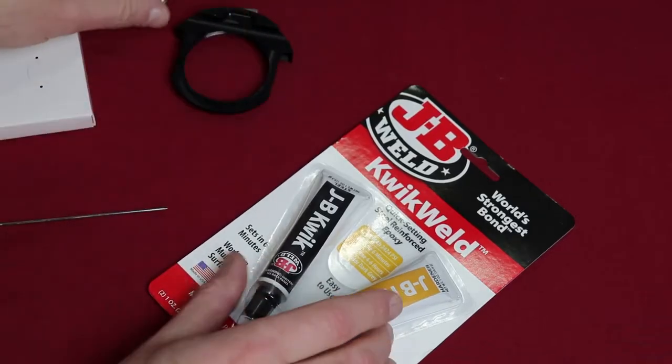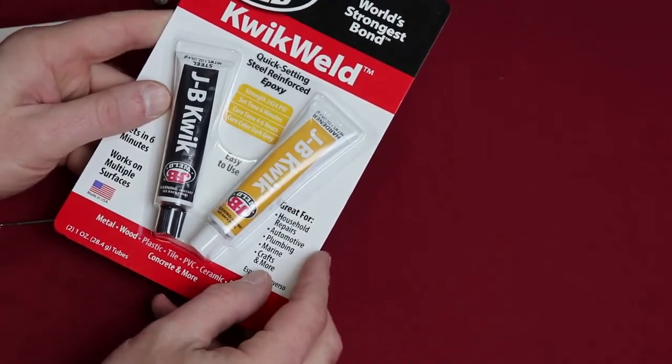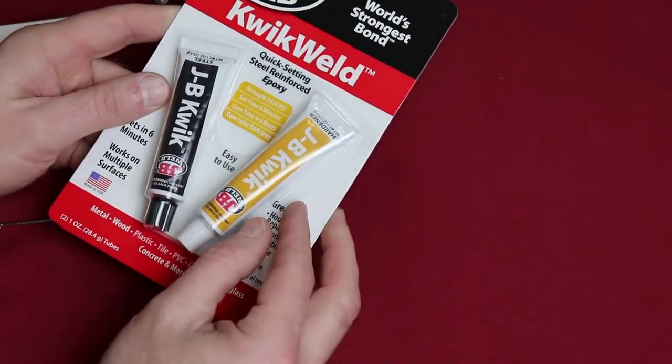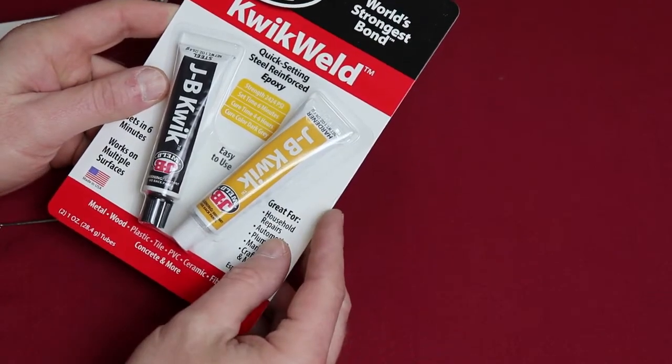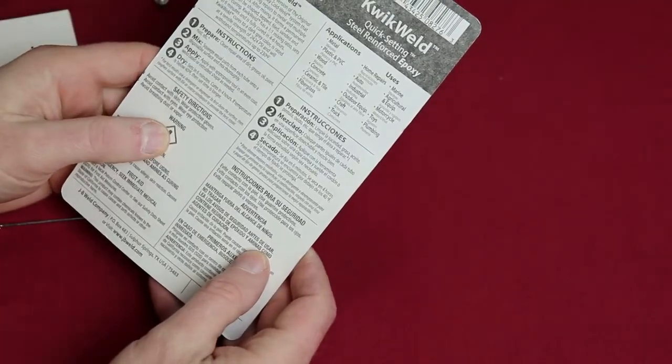So the product I'm going to be using is this JB Quick Weld. Supposed to be for steel reinforced epoxy. Setting time is supposed to be about six minutes and should cure in four to six hours. So basically pretty easy to understand.